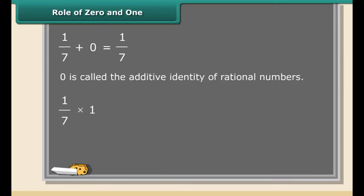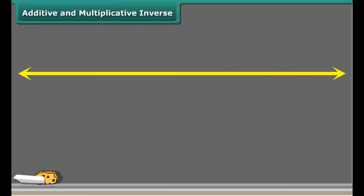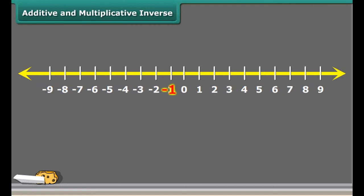Here we have added a 0 to a rational number. What did you notice? When we add 0 to a rational number, the sum is always again rational number. For this reason, 0 is called the additive identity of rational numbers.